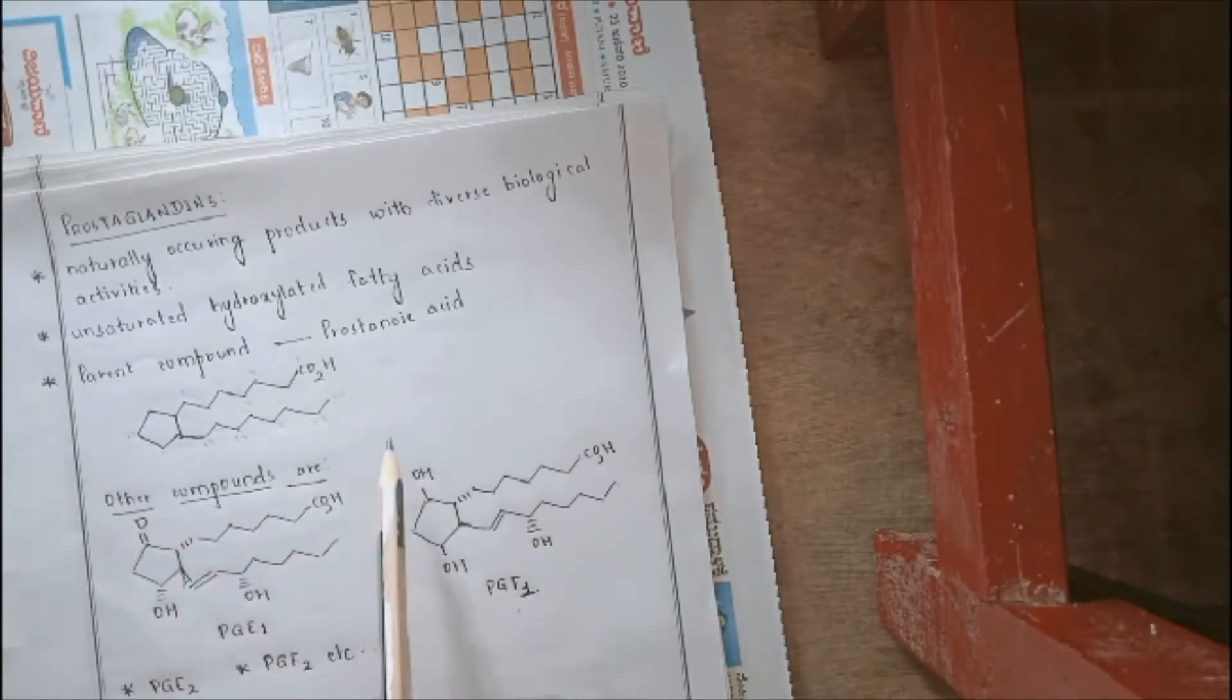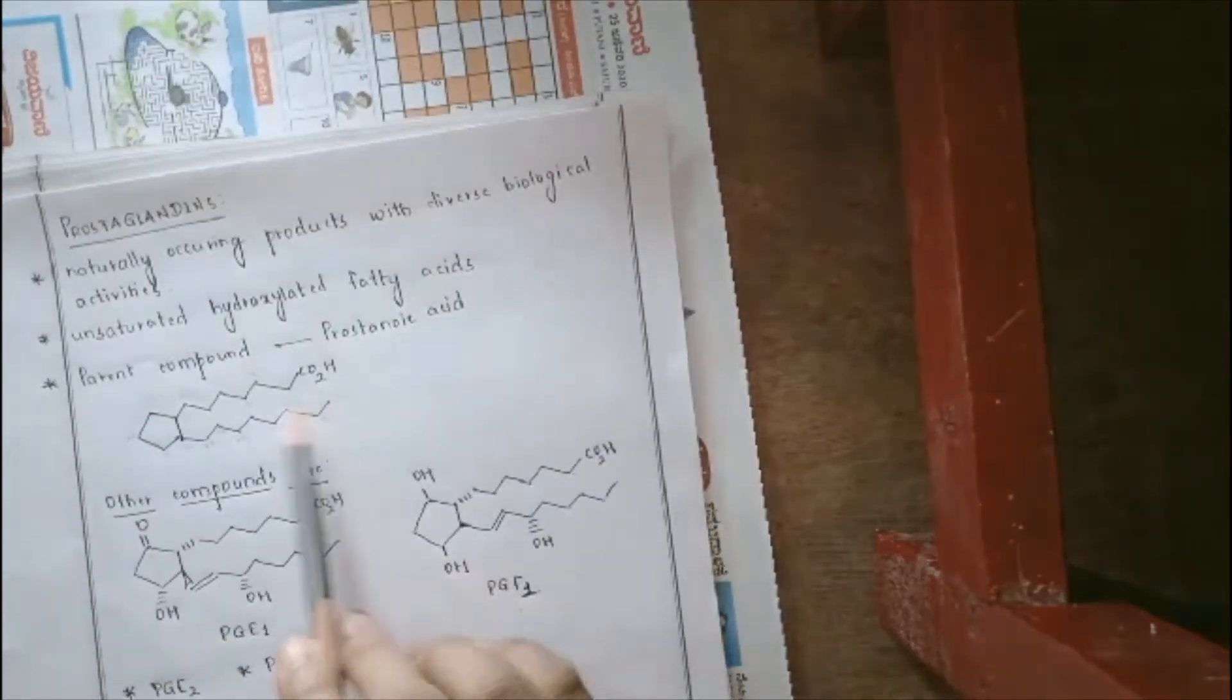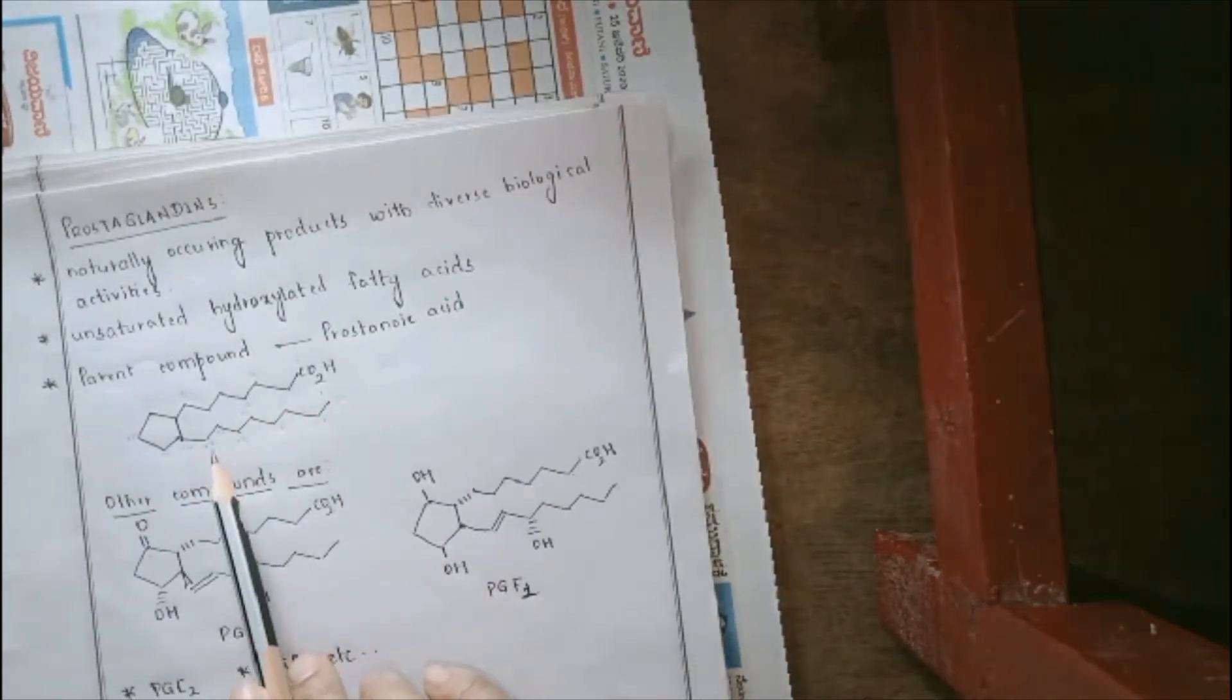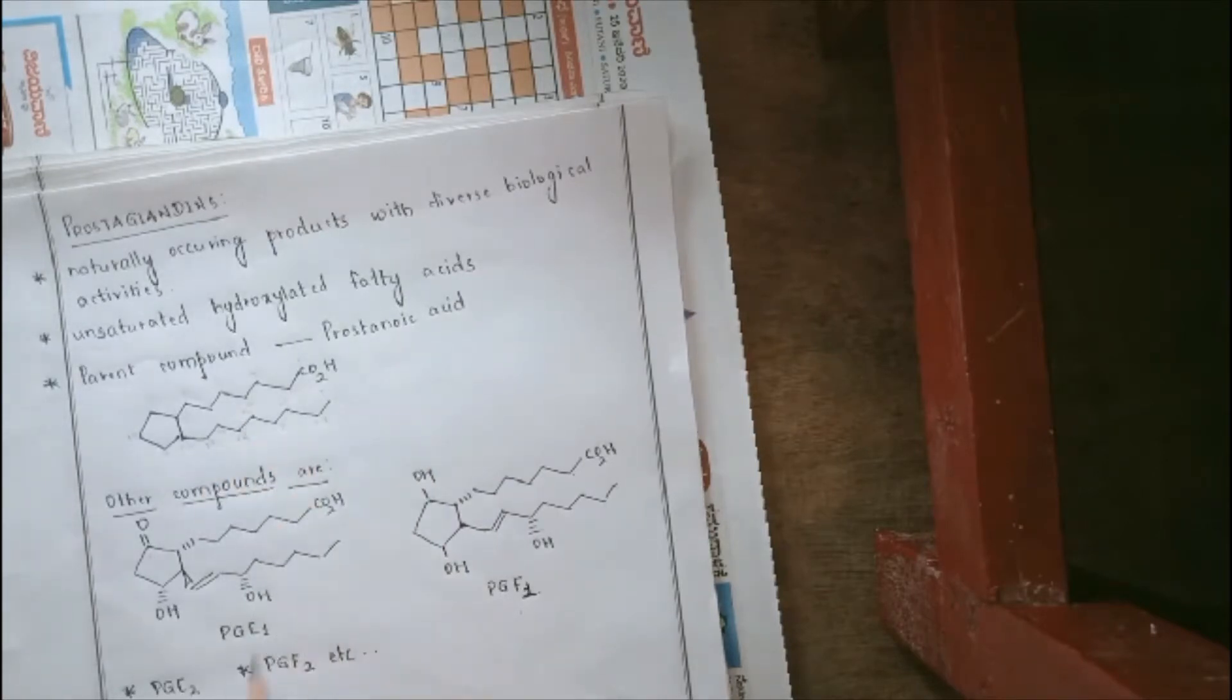The parent compound of these Prostaglandins is prostanoic acid. Basically, there is a presence of a carboxylic group, there is a presence of a long chain system and such a system can be called as prostanoic acid.